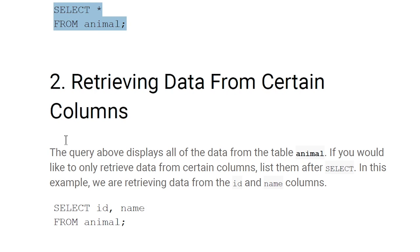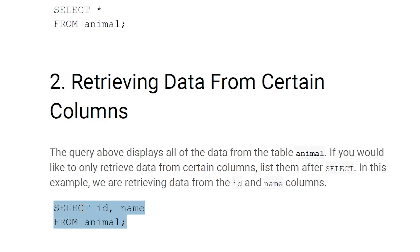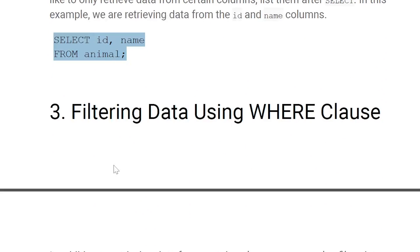Retrieving data from certain columns: after SELECT you give the column names from which the data is to be retrieved, and after FROM you give the table name. For example, SELECT id, name FROM animal — this will select the id and name columns from the animal table.